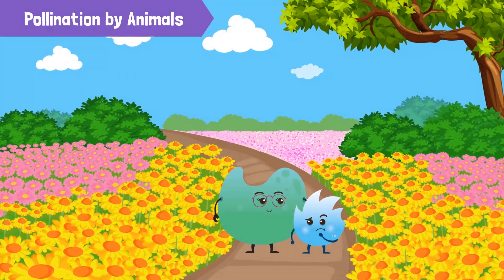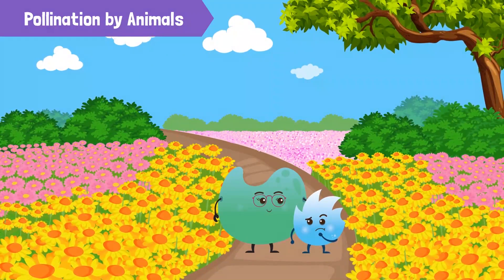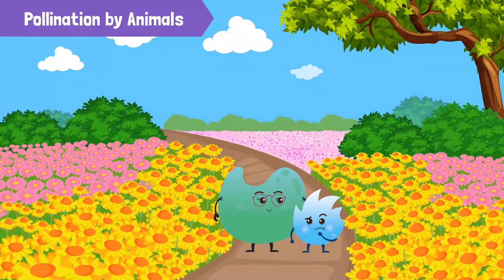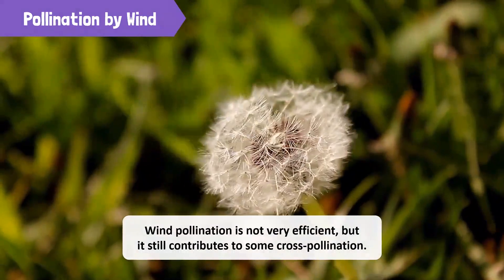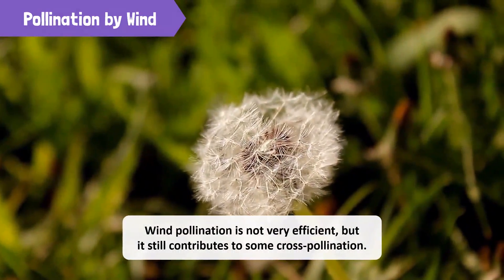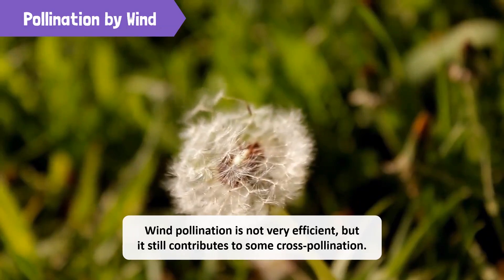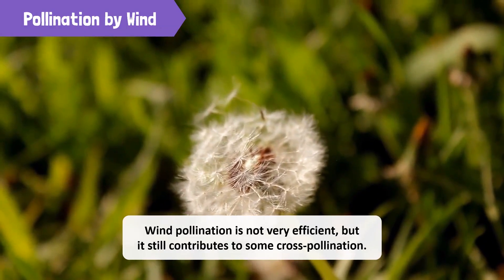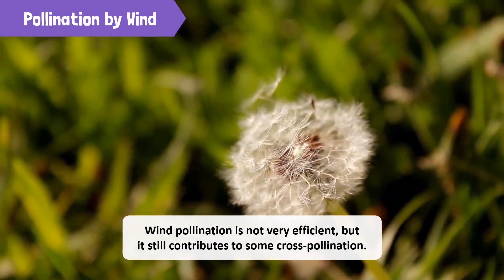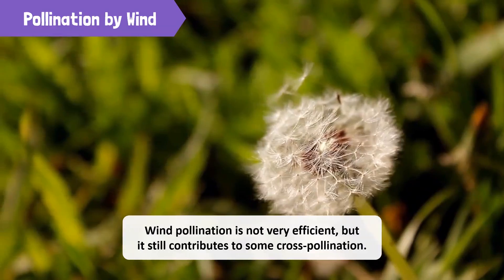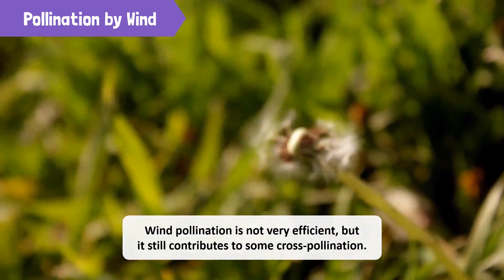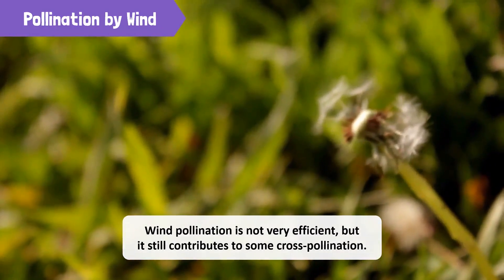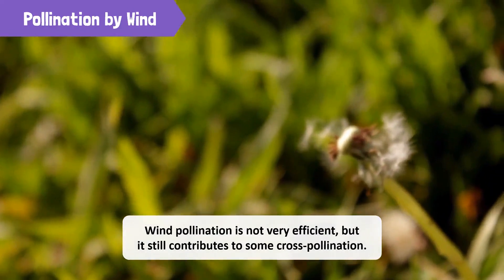But what happens to flowers that don't have colorful petals, or those that have no petals at all? Well, such flowers are pollinated by the wind. Wind pollination is not very efficient, but it still contributes to some cross-pollination. Grass, for example, is pollinated by the wind.